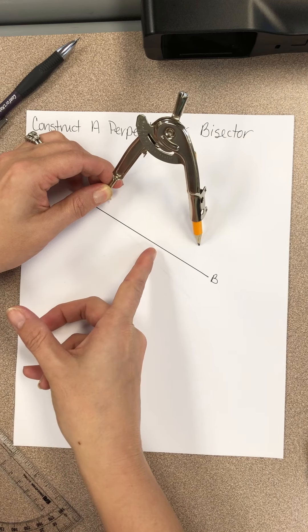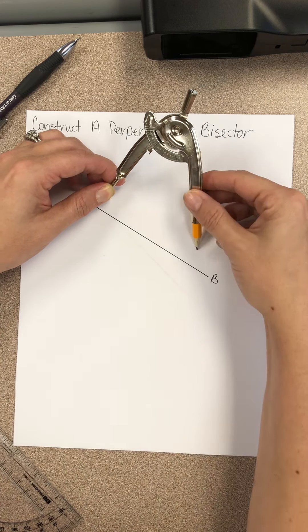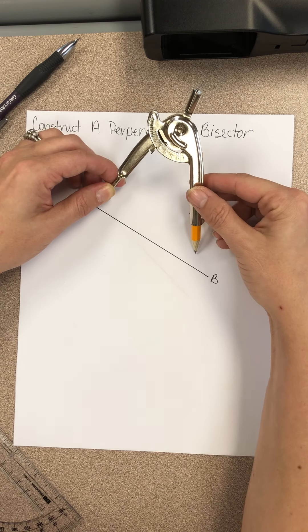In other words, you want it anywhere between here and here. You don't want it to go past B and you don't want it to be less than half. So right where it is is probably just right for me because it's in between those two.